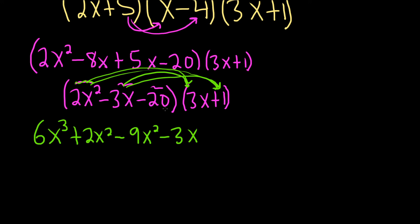Finally, we're at negative 20. So negative 20 times 3x is a minus 60x. And negative 20 times 1 is minus 20.